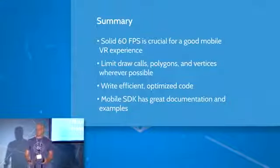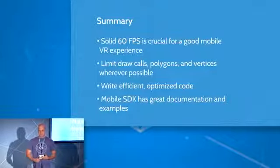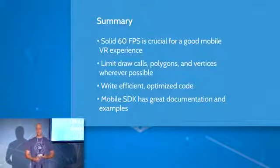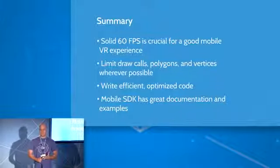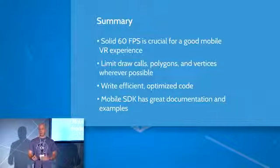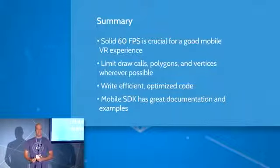The big takeaway from today is that we need a solid 60 frames per second in order to have a good mobile VR experience. We can get there by sharing materials to lower draw calls, baking lighting to static geometry, optimizing polygons and using simple collision, and pooling game objects to avoid performance hits. When you're ready to bring your current project to mobile VR, or want to build something new, our mobile SDK has excellent documentation and examples to get you started. We are so excited to see what you guys come up with. Thank you.